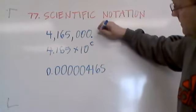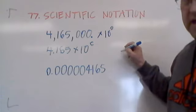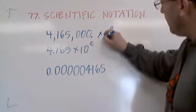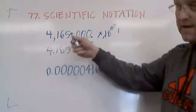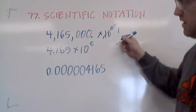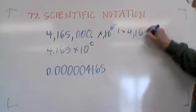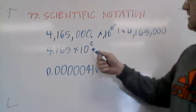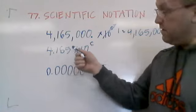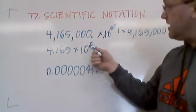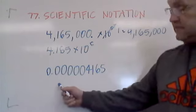Up here, think of it, this is the same as 10 to the 0 power. Any number to the 0 power is 1. So it's like 4 million times 1 will equal the original number, 4,165,000. So we are making the original number smaller. We must make the exponent of 10 larger to make it an equal number.